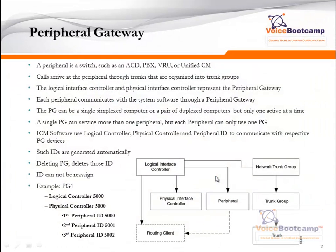Peripheral gateway is a switch or a device that allows you to communicate with an ICM, such as ACD or Call Manager, PVX, VRU, or Unified CM. A call arrives at the peripheral to a trunk that are organized into a trunk group. A logical interface controller and a physical interface controller represent the peripheral gateway. When an ICM wants to talk to a call manager, it will use the peripheral gateway to communicate with the device. Each peripheral will communicate with the system software using a peripheral gateway known as PG.